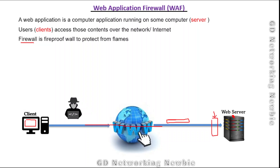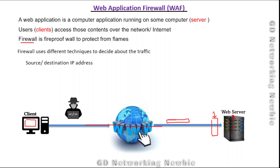The firewall needs a decision mechanism — some training or pattern — and it works on the basis of different techniques. It can decide based on source or destination address: if a packet arrives at the firewall, it can look at the source IP address or destination IP address. If the source IP address comes from an unreliable network, the firewall can drop that packet and not allow it through.